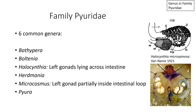We'll start with the location of the gonads. In genus Halocynthia and genus Microcosmus, we have either the left gonads lying across the intestine — for Halocynthia, as shown in the diagram from Van Name on the top right, the male and female gonads are draped over the intestine, covering a large portion of it. Versus in Microcosmus, the left gonad is partially inside the intestinal loop. In the dissection photograph, you can see the intestine dyed bluish, and the white gonads partially inside but also partially outside of that intestinal loop.